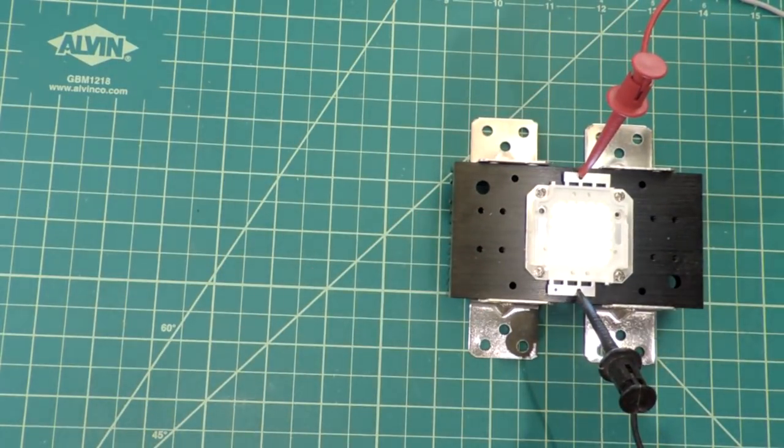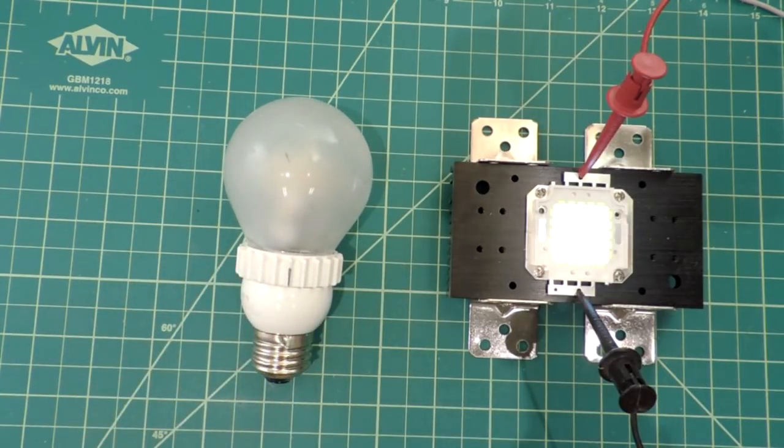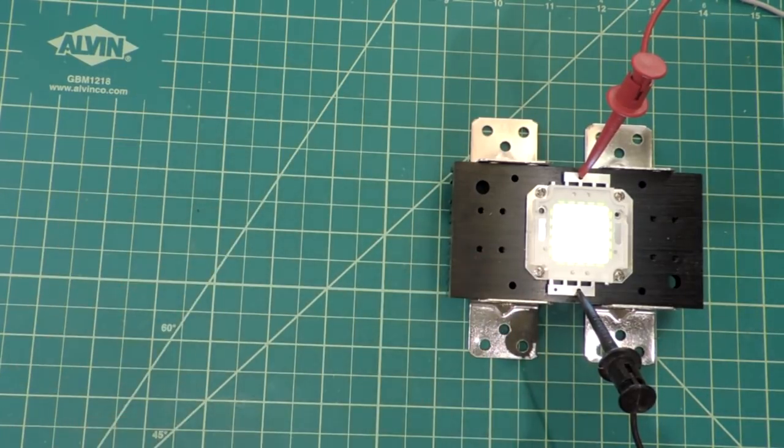To give you some sort of scale of that, here's a 60 watt equivalency bulb that produces 800 lumens. You would need 17 and a half of these to create the same amount of light output apparently that this one is rated for.